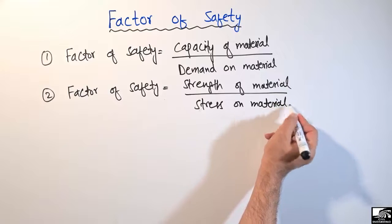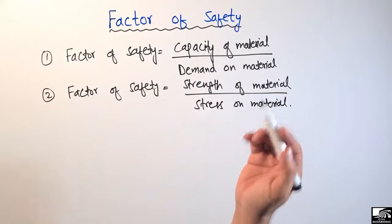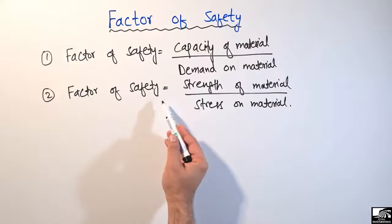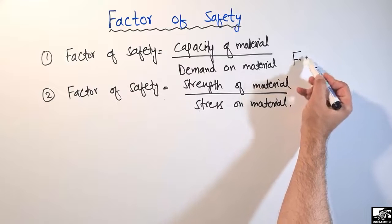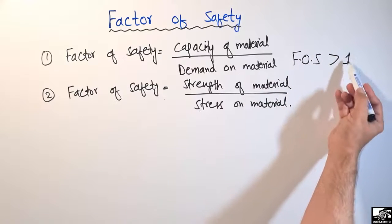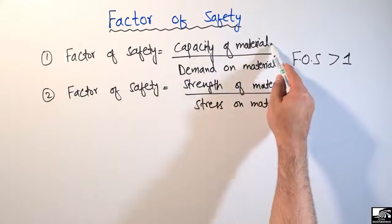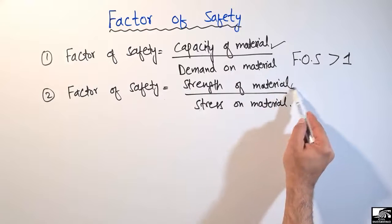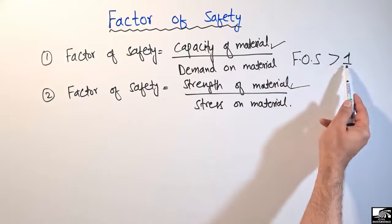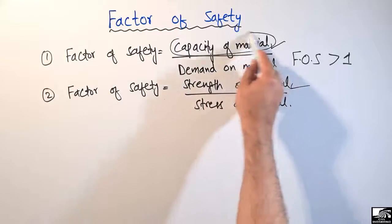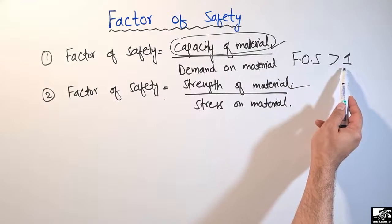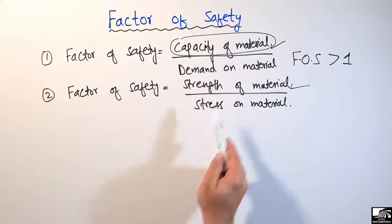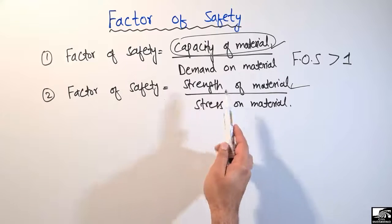This is the same idea — how much strength your material has to take the load versus how much load is coming on the material. It should be kept in mind that the factor of safety should always be greater than one. This means the capacity of the material should always be greater than the demand, or the strength should always be greater than the stress. If the numerator is greater than the denominator, we get a factor of safety greater than one.